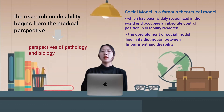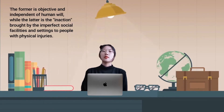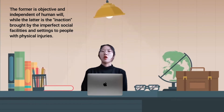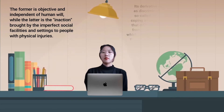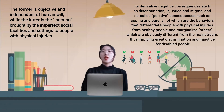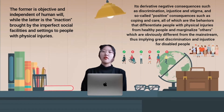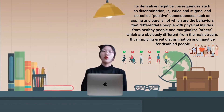This distinction formally differentiates the approach to addressing the disabled. The former is objective and independent of human will, while the latter is harm brought by imperfect social facilities and settings to people with physical injuries. According to this theory, the medical orientation represents the mainstream perception of people with physical injuries. Its derivative negative consequences such as discrimination, injustice, and stigma, and so-called positive consequences such as coping and care, all differentiate people with physical injuries from healthy people, marginalizing those obviously different from the mainstream, thus implying greater discrimination and injustice for disabled people.